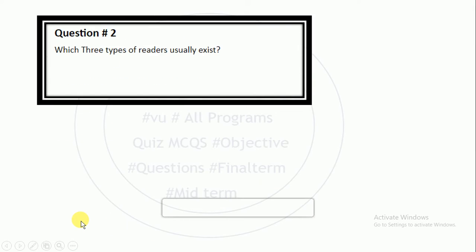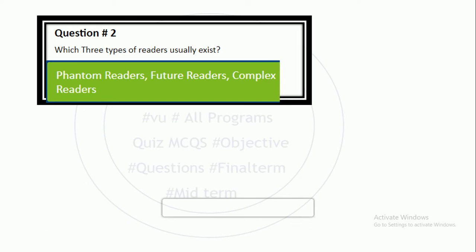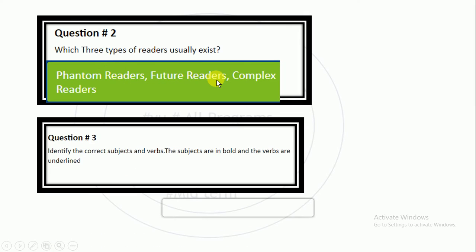Which types of readers usually exist? Three types of readers exist: phantom readers, future readers, and complex readers. You can remember them as P, F, C — Phantom, Future, and Complex readers.